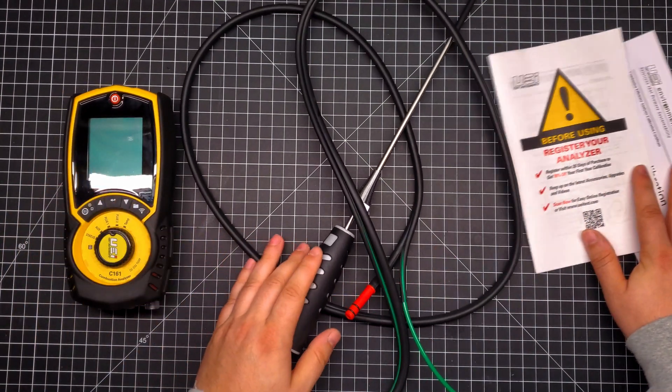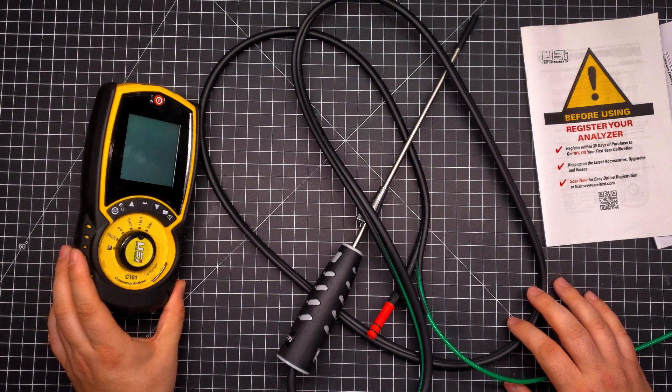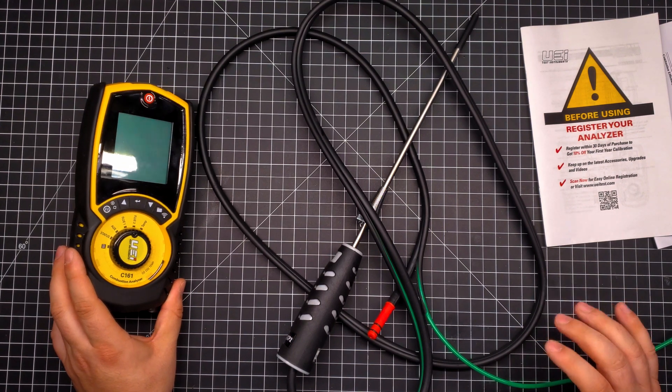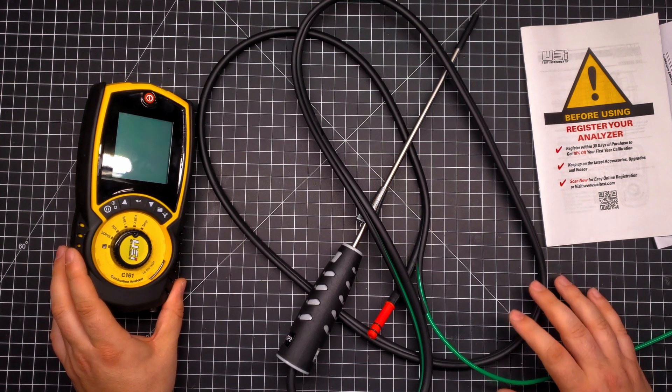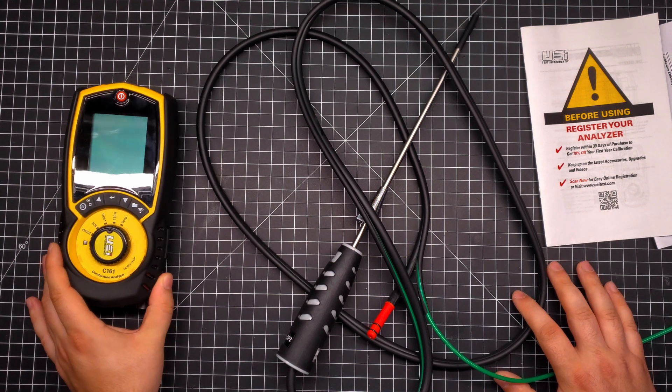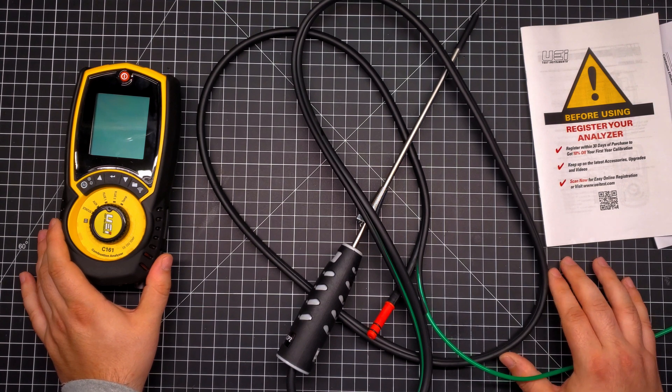So like I said, obviously I bought this combustion analyzer because of the NDIR CO2 sensor that it uses in place of the oxygen sensor. In my experience, the non-long life electrochemical O2 sensors really only last one or two years depending on how much you're using the combustion analyzer and how well you're taking care of that sensor.